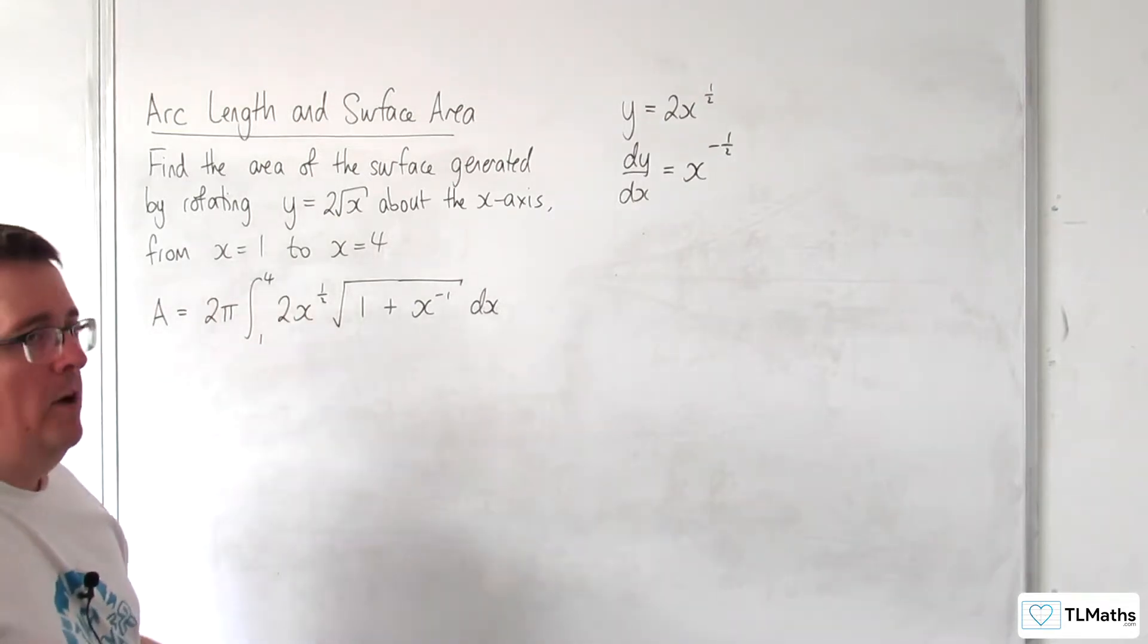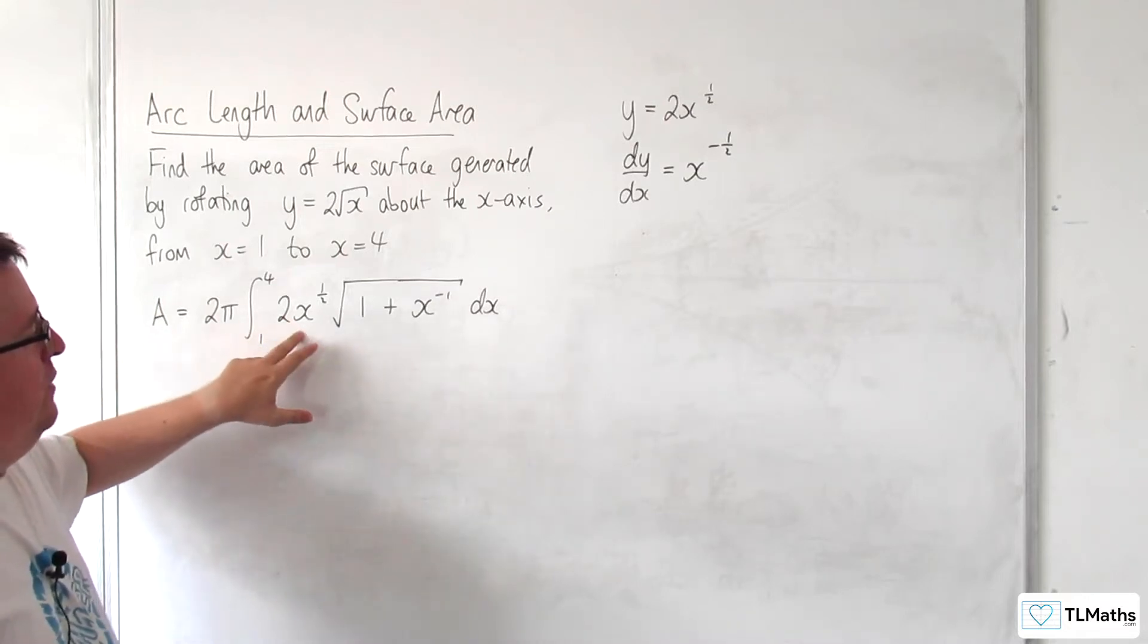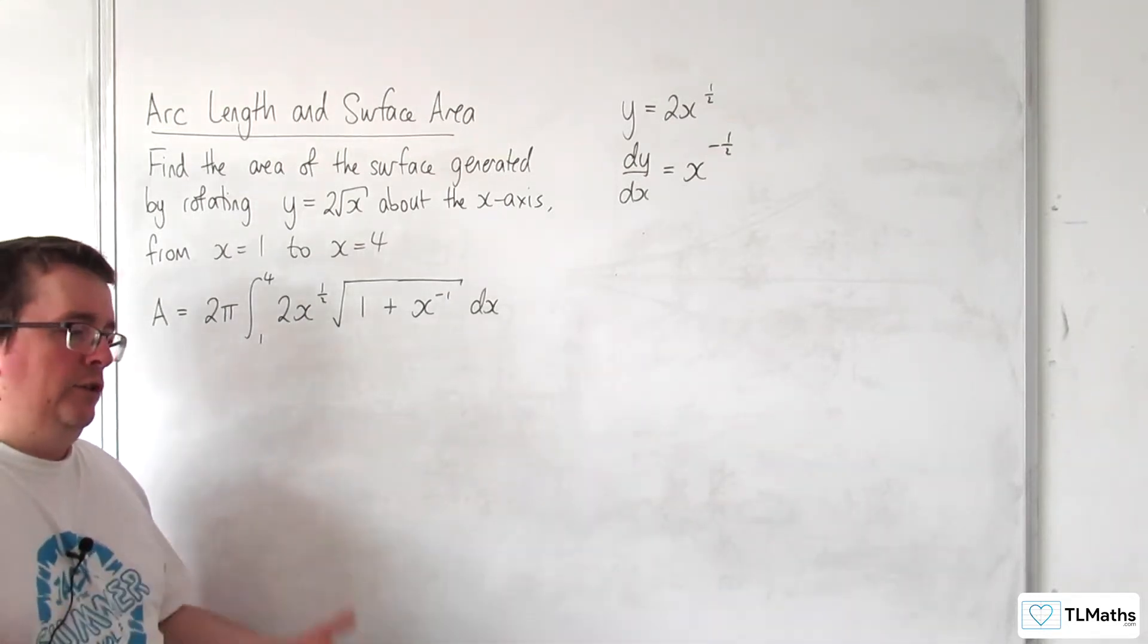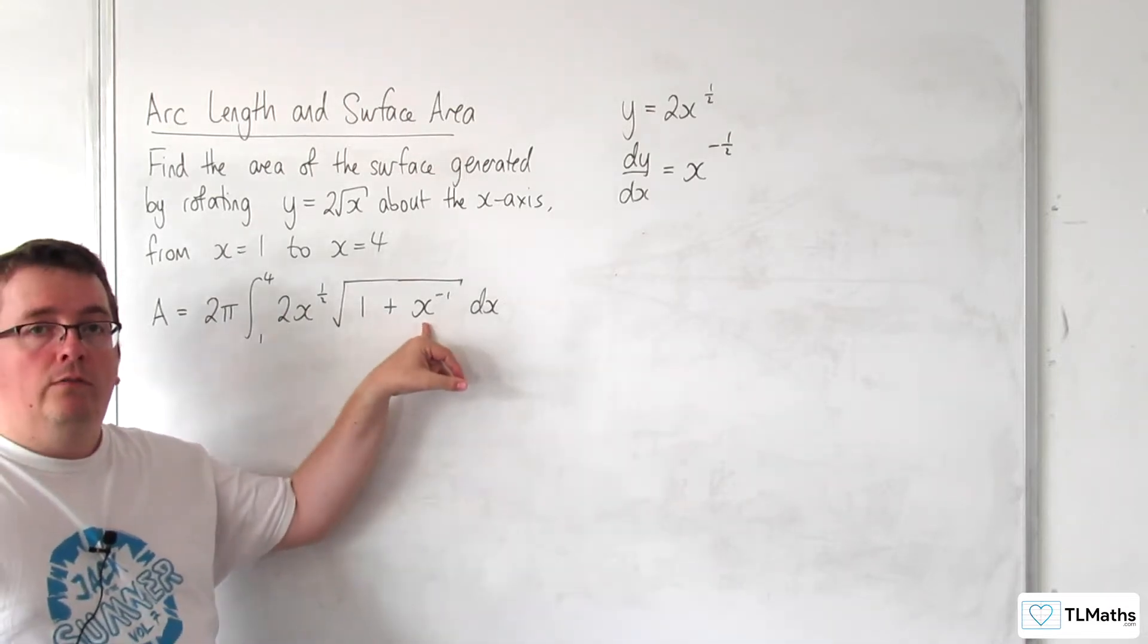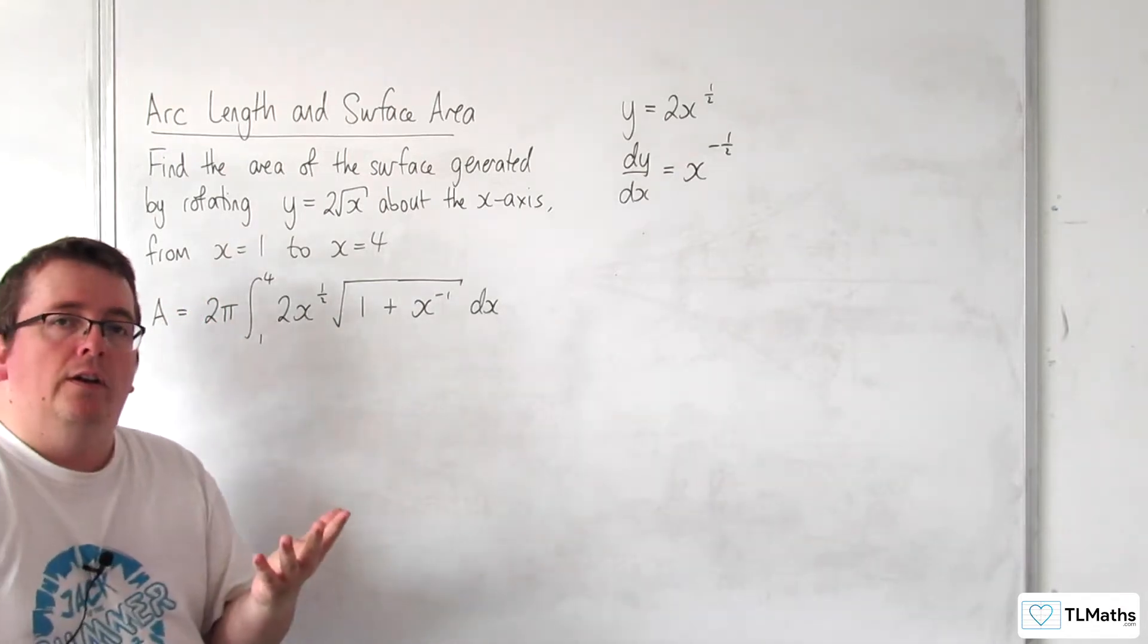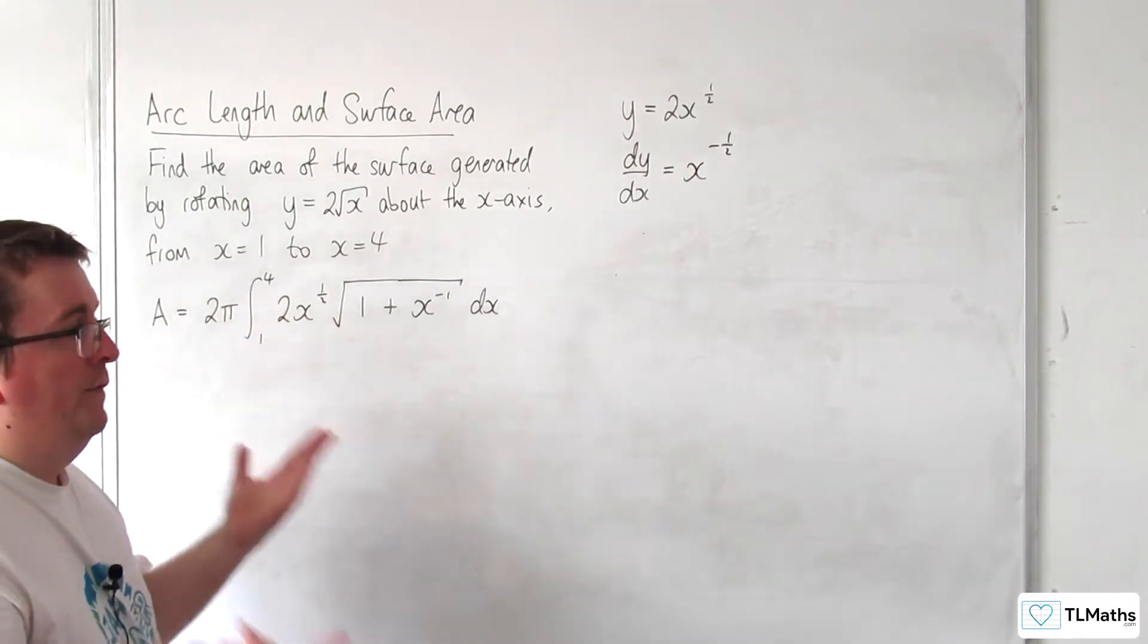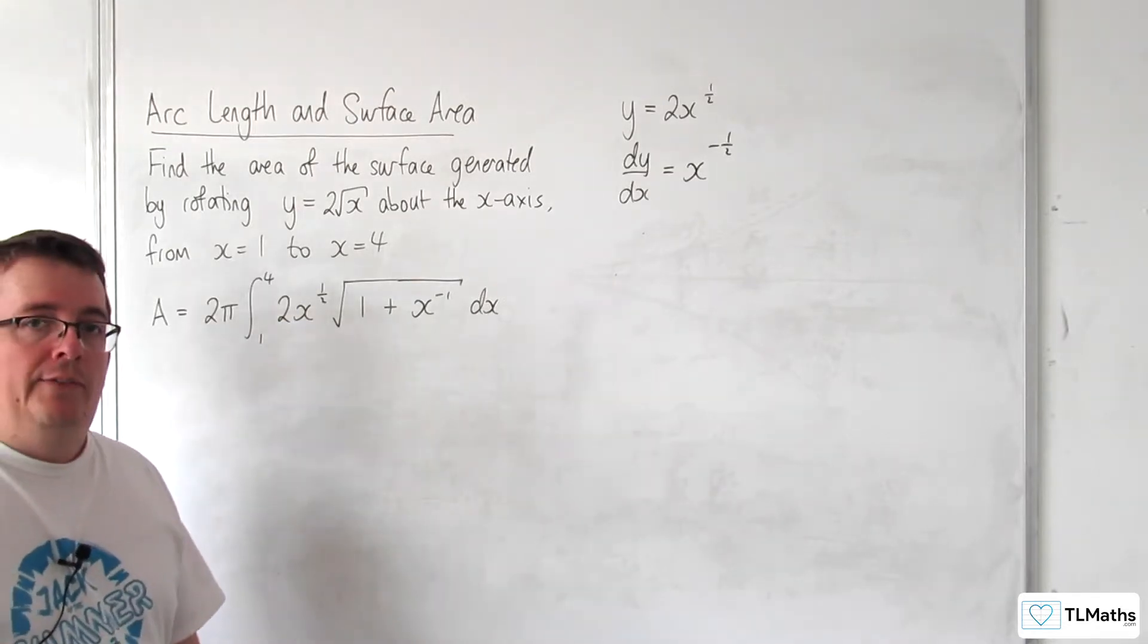The substitution that would probably make the most sense is to use u is equal to x to the half. The reason why that might make sense is because if I write u equals x to the half, then I can write x as u squared, and I could write x to the minus 1 as 1 over u squared, and perhaps through everything that I have with the manipulation, I will be able to get it into a form where I can integrate it more nicely, perhaps using reversing the chain rule. That's probably my only bet at this stage.